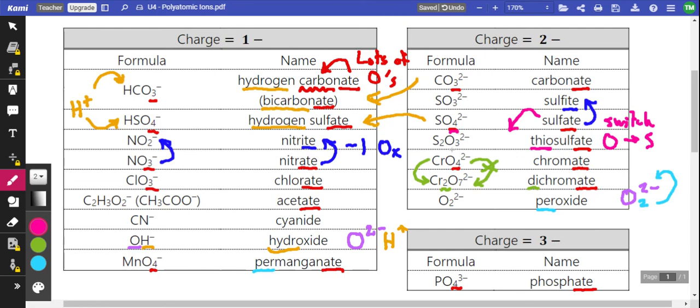And then one of those O's becomes an S. So S2O3. Instead of just having one S and four O's, we have two S's and three O's. Okay? So theo means we're switching out an O for an S. Okay? So again, if you can remember sulfate, you can make that switch.